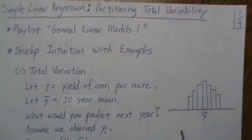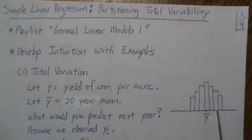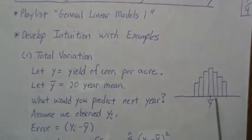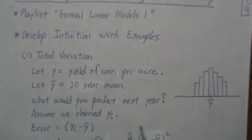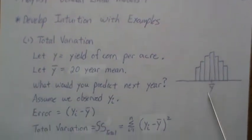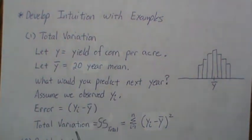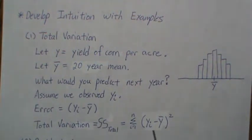Let's assume that we observed Y_i. We predicted Y-bar and we observed Y_i — this value. The error in that prediction is Y_i minus Y-bar. We were just a little bit off. We can do this for all of our data, looking at the squared distance — the squared error — and we call that the total variation: the sum of squares total, defined as the sum of (Y_i minus Y-bar) squared.